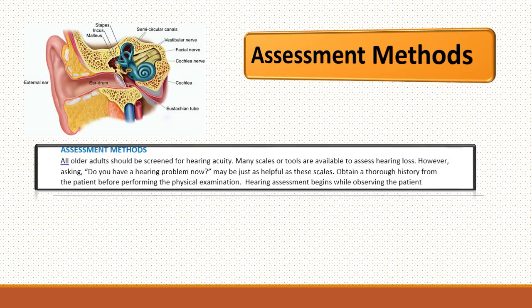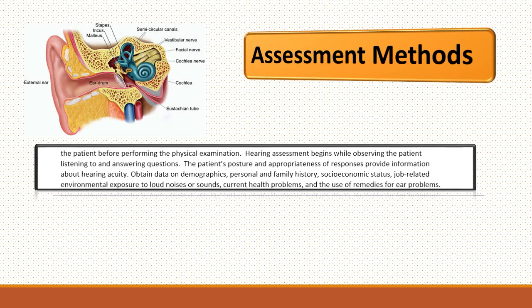In discussing assessment methods for ears, it's important for the RN to remember that all older adults should be screened for hearing acuity. There are many skills and tools available to assist with hearing loss. You can also start by asking the patient, 'Do you have any hearing problems?' You want to obtain a thorough history from the patient before performing the physical exam. Hearing assessment begins with actually observing the patient and listening to the patient and seeing how they answer questions. The patient's posture and appropriateness of responses provides you with information about whether they have a hearing problem.